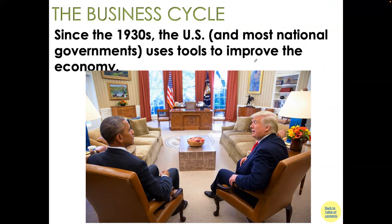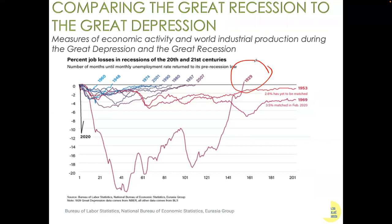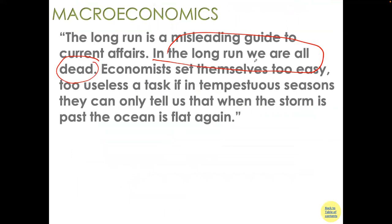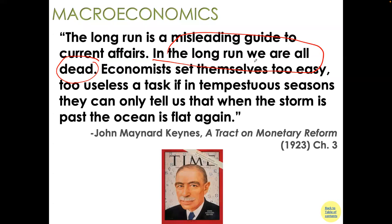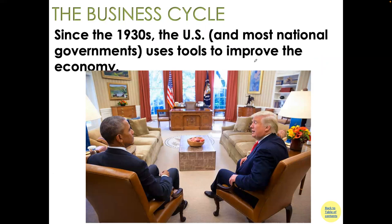Now let's look at the second topic: the business cycle. Essentially it refers to the fluctuation of our economy. A recession means the economy is in a downturn — output declines and unemployment rises, meaning the economy is in hard times. Since 1930, most governments try to do something to help the economy using different tools.